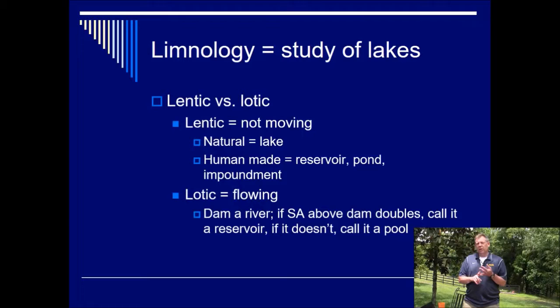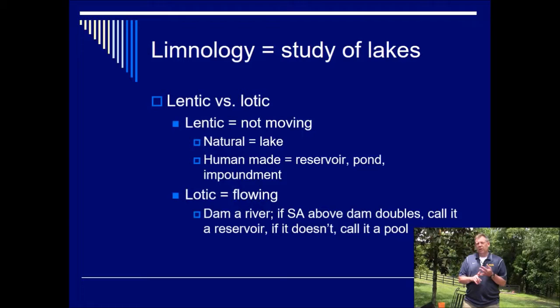So first terms I want to throw at you just for vocabulary is lentic versus lotic. Lentic is standing water, lotic is moving water. When you hear lotic, think locomotion. That's how you can tell the difference between the two. Now, there are some terms that are used interchangeably, but we do have kind of somewhat specific definitions for them. So whenever we talk about a standing body of water, a lot of time we'll call it a lake. This lake, that lake, Kentucky Lake, Barkley Lake. But really, a lake is a natural body of water, not human made.